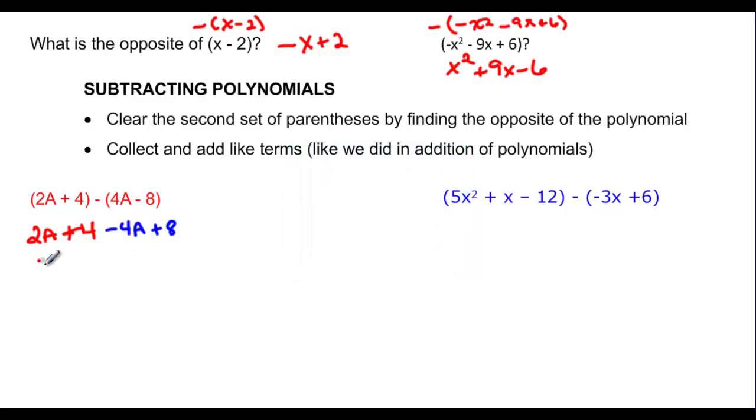So combining like terms, 2a minus 4a plus 4 plus 8, I get negative 2a and 4 plus 8 will give me plus 12.